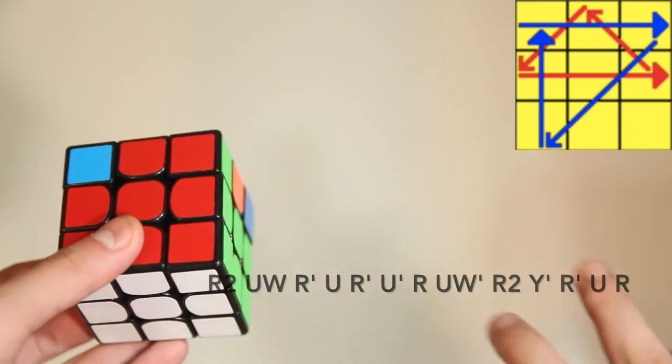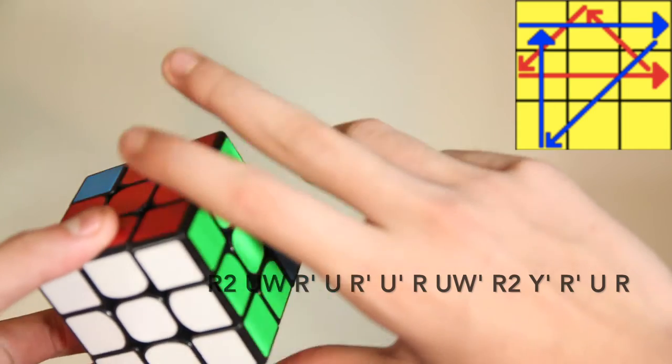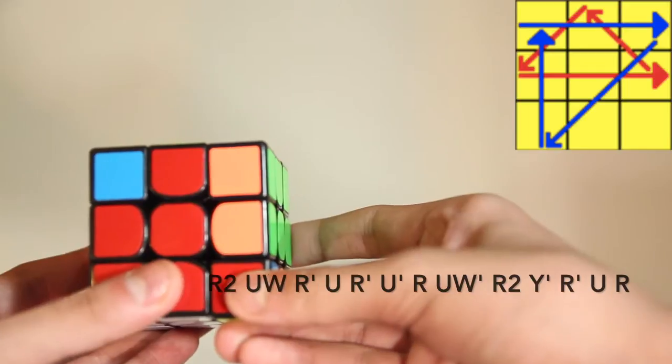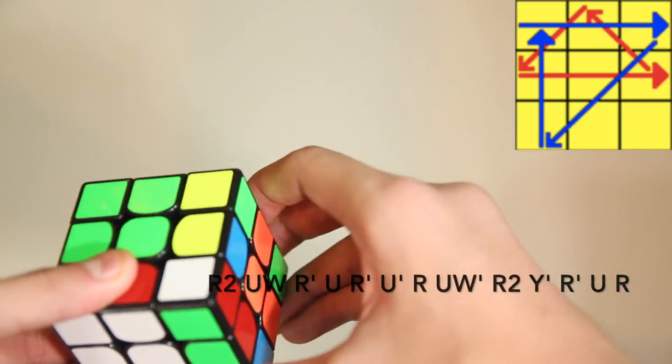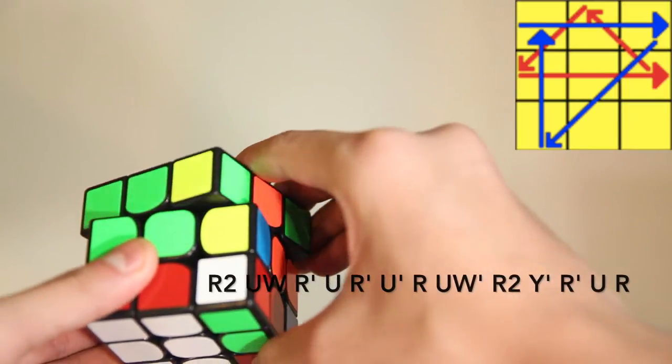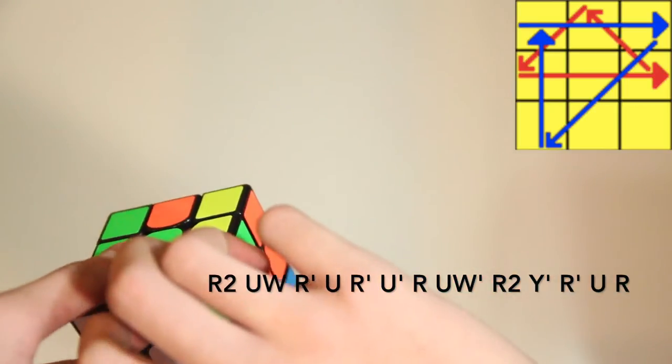So basically, you grip it like this with two fingers here and your thumb here. So you bring it up, do a UW with your index finger, R' and then use sort of your fourth finger, I guess, to push U and then do another R'.